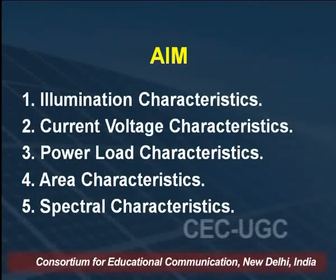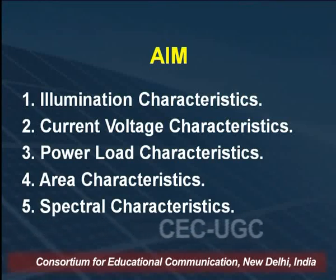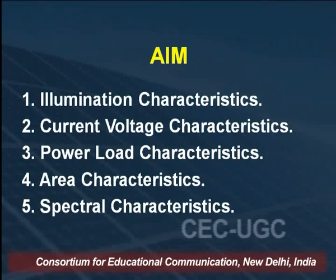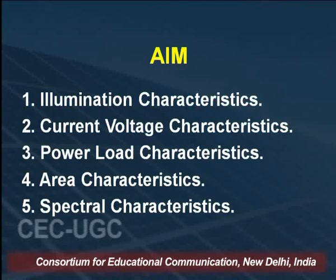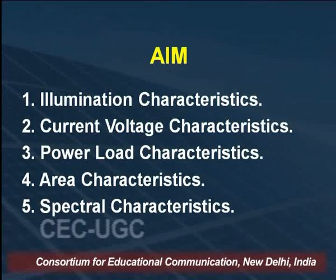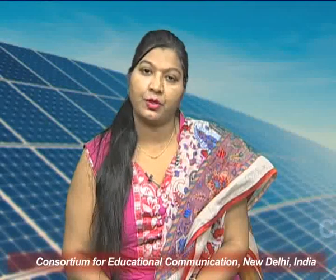Now, what are the aims of this experiment? There are 5 aims. Number 1, we can find out the illumination characteristics. Number 2, we can find the current-voltage characteristics — this is the important aim. Number 3 is the power-load characteristics. Number 4 is the area characteristics, to find how much area the solar cell covers to give the output. Number 5 is the spectral characteristics.